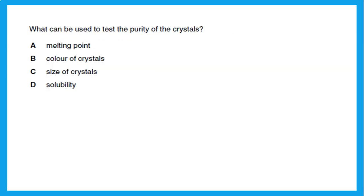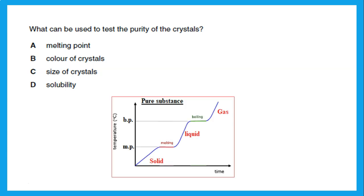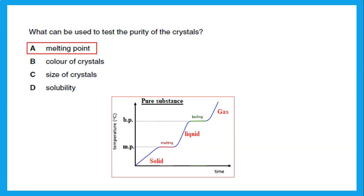What can be used to test the purity of crystals? If a crystal is pure, it should have a sharp melting point. To test the purity of pure solids or crystals, we test the melting point — if pure, it should be specific and sharp, not over a range. If we're talking about a liquid and want to know if it's pure, we test its boiling point: it should boil at a specific temperature sharply, not over a range.